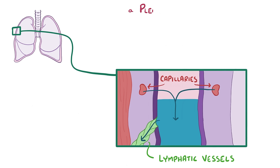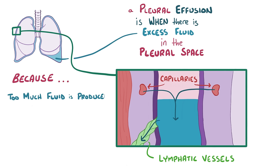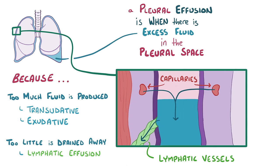A pleural effusion is when there's excess fluid in the pleural space, either because too much pleural fluid is produced by the body — which could be due to a transudative or exudative effusion — or because the lymphatics can't effectively drain away the fluid, called a lymphatic effusion.